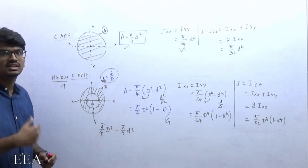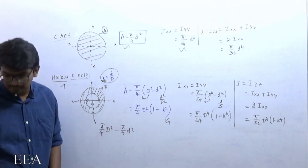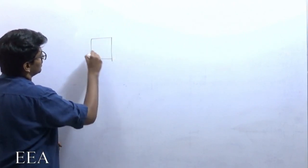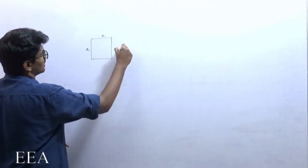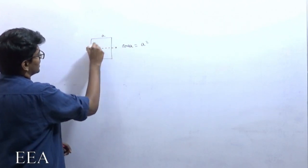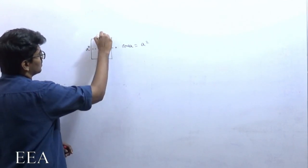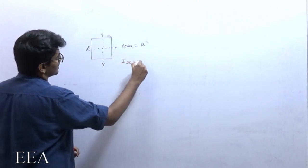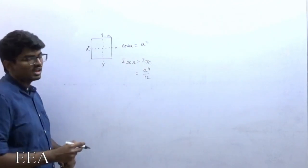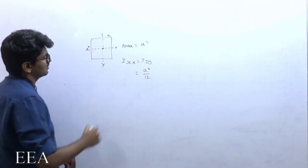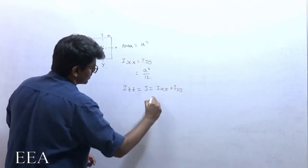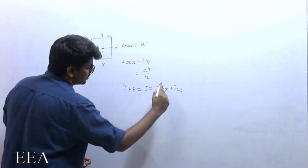Next is a square cross-section with side a. Area = a². Ixx and Iyy are both equal to a⁴/12. The polar moment of inertia J = Ixx + Iyy = 2 · a⁴/12 = a⁴/6.